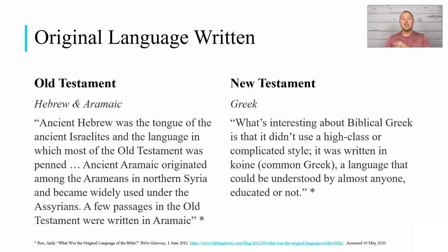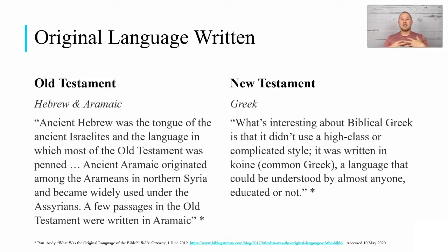Ancient Hebrew was the tongue of the ancient Israelites and the language in which most of the Old Testament was penned. Ancient Aramaic originated among the Arameans in northern Syria and became widely used under the Assyrians. Something interesting about the biblical Greek is that it wasn't a super high-class, intense Greek — it was used more as a common, colloquial type of Greek. That's important because it lends to the fact that we are made to understand the Bible; it was written in common language rather than some highly sophisticated form.